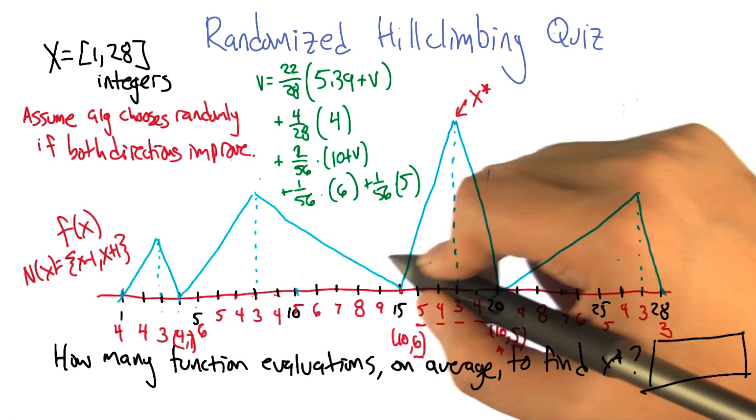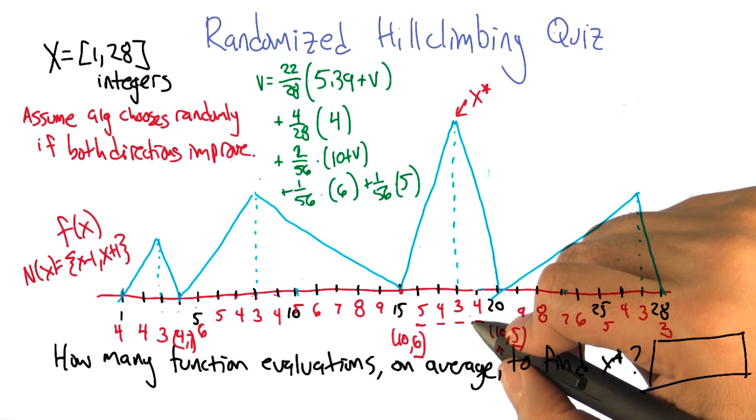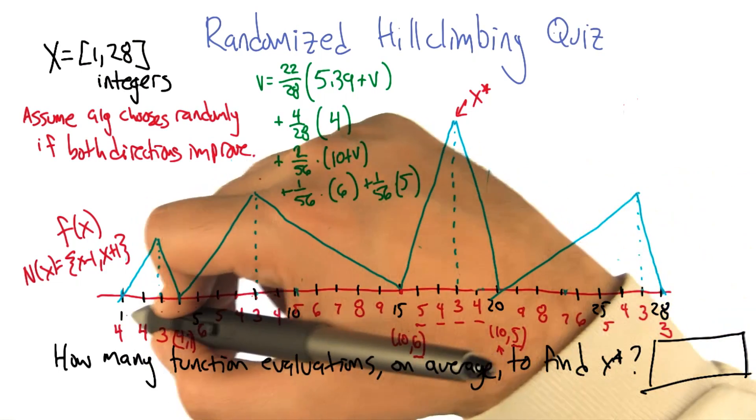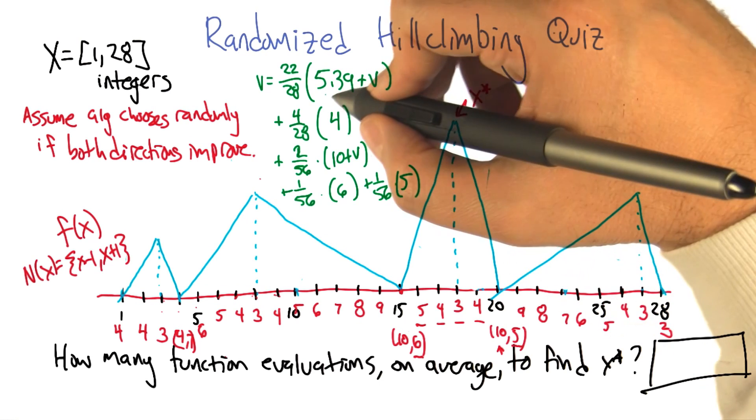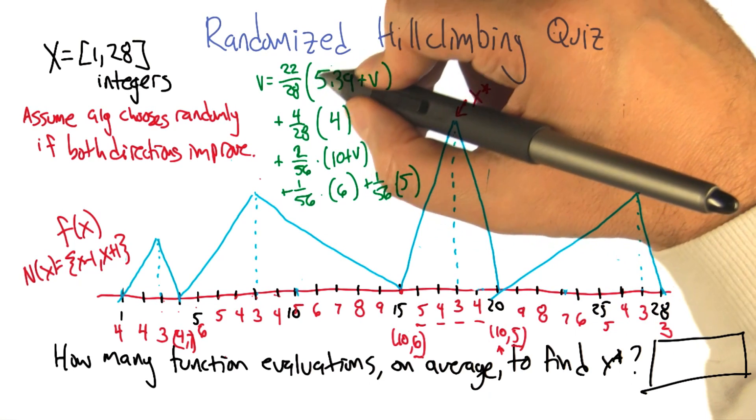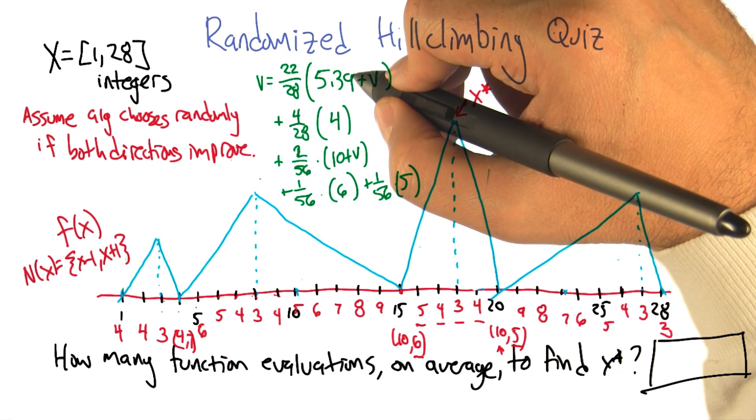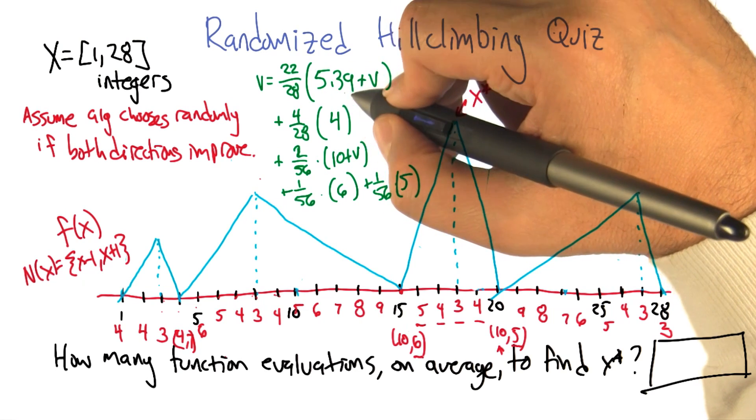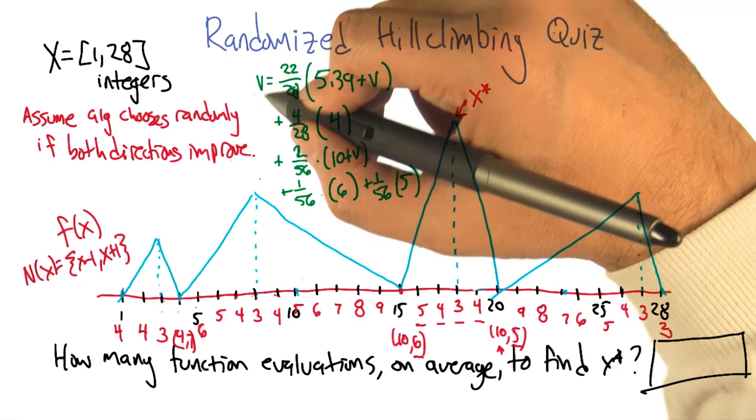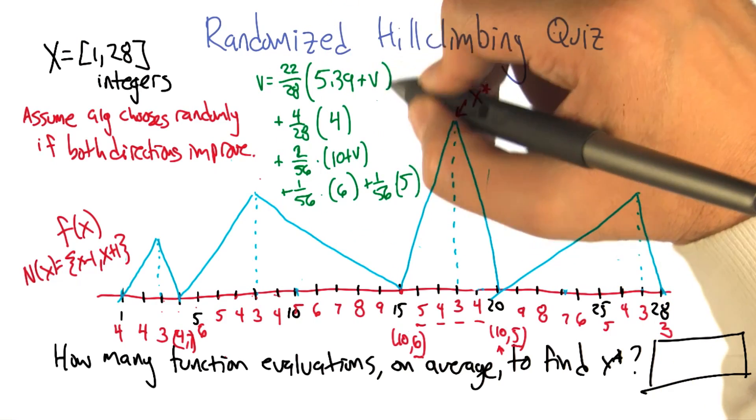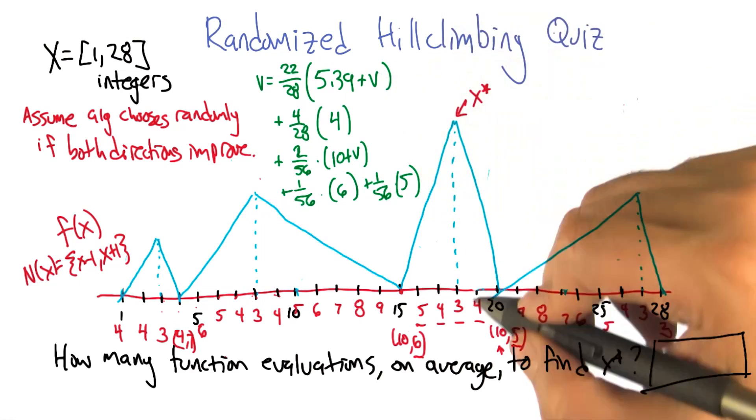So now we can actually work out what the expected number of steps to the global optimum is. It turns out for 22 out of 28 of these points, they average 5.39 before they discover they're actually at a local optimum. At which point we have to start the whole process over again. And so whatever the expected value of reaching the local optimum is, we incur that same cost again.